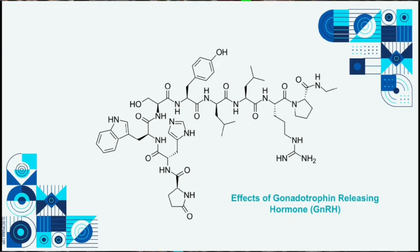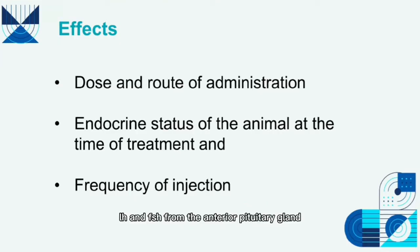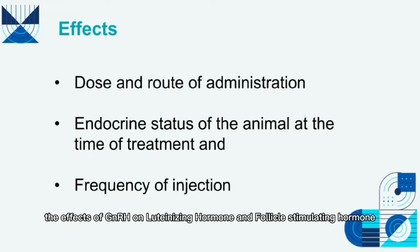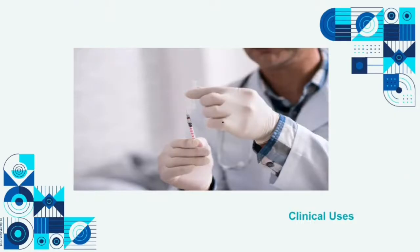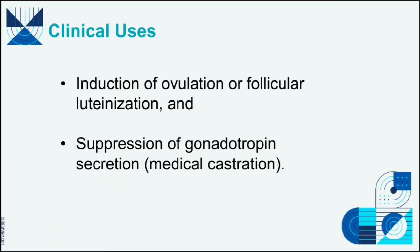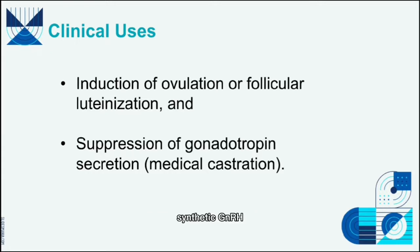Administration of GnRH releases LH and FSH from the anterior pituitary gland. The effects of GnRH on LH and FSH release are dependent on the dose and route of administration, the endocrine status of the animal at the time of treatment, and the frequency of injection. The two principal clinical uses of GnRH are induction of ovulation or follicular luteinization, and suppression of gonadotropin secretion, also known as medical castration.